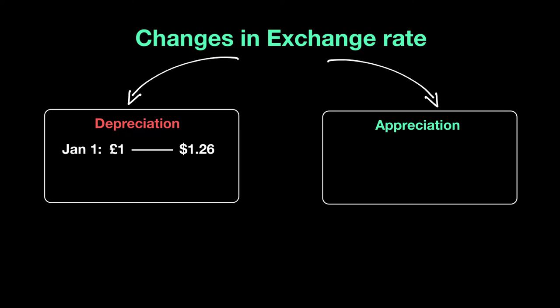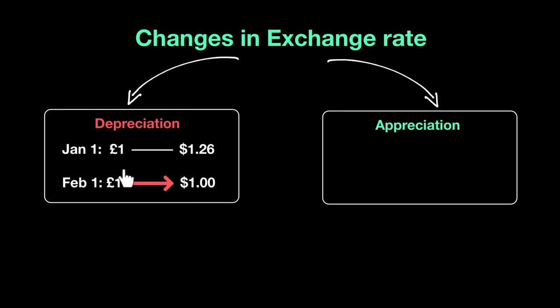Let's say a can of Coke in the US is $1.50. So I know that I can only get $1.26 for 1 pound, so I'm going to have to give a little over 1 pound to get an equivalent of $1.50. Now if a month later I find out that 1 pound is now worth $1, my currency has depreciated — because now when I pay my 1 pound I only get $1, and I'll have to put in half a pound more to get $1.50. So with the same pound you can afford less — you could buy $1.26 worth of stuff but now you only buy $1 worth of stuff. That is currency depreciation.